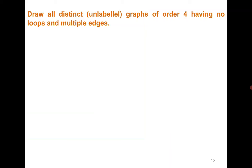Let's consider some interesting questions. The first: draw all distinct unlabeled graphs of order 4 having no loops and multiple edges. We discuss unlabeled graphs because if we label vertices, two structurally identical graphs may appear distinct — e.g., a path on 3 vertices labeled differently yields labeled graphs. Generally, unless mentioned otherwise, we talk about unlabeled graphs.